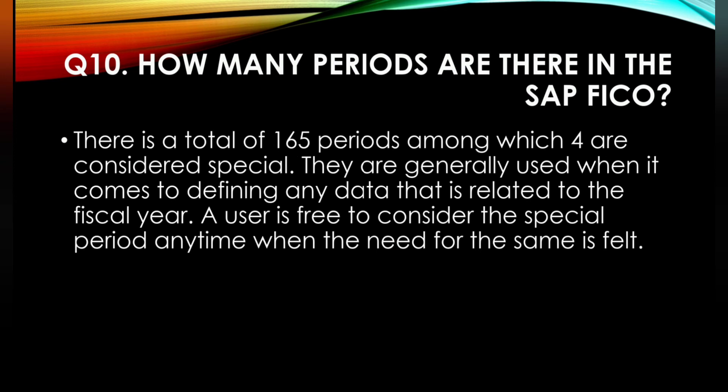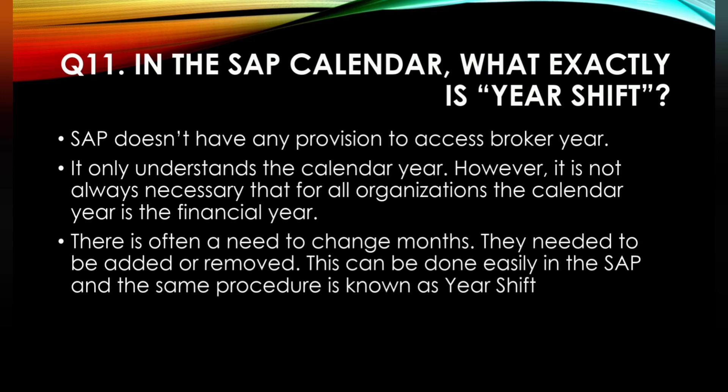The next question is: how many periods are there in SAP FICO? There are a total of 16 periods, among which four are considered special. They are generally used when it comes to defining any data related to the fiscal year. The user is free to use the special periods anytime when the need arises.